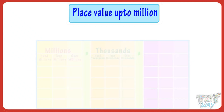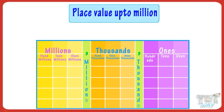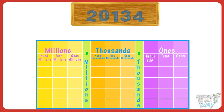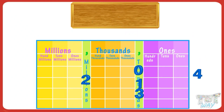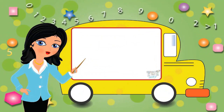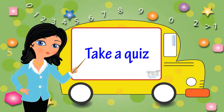So kids, just remember the name of the commas: the first comma from the right is thousands, the second comma from the right is millions. Today we learned our place value chart up to millions and naming the numbers. Now go ahead and take a quiz to learn more.